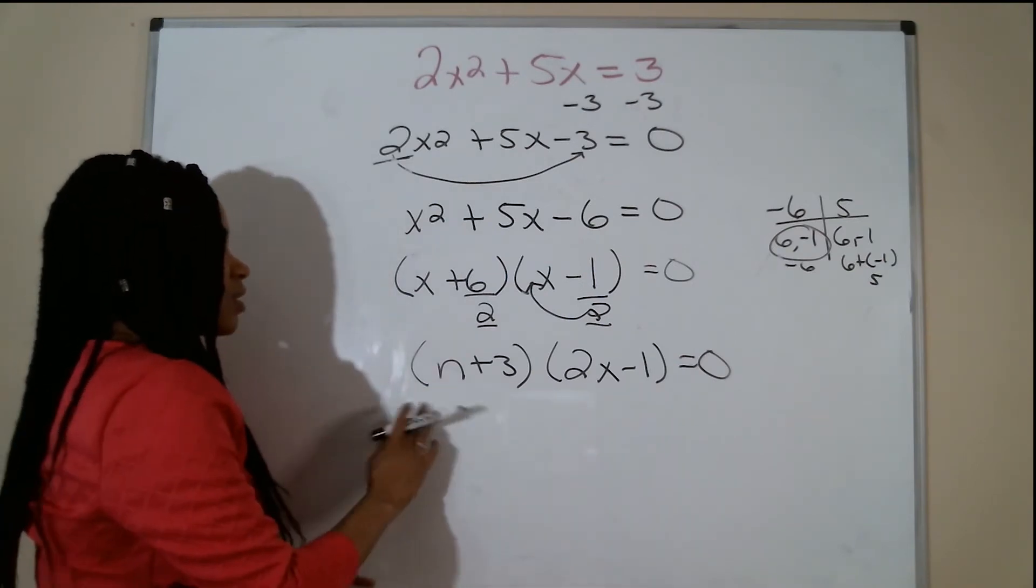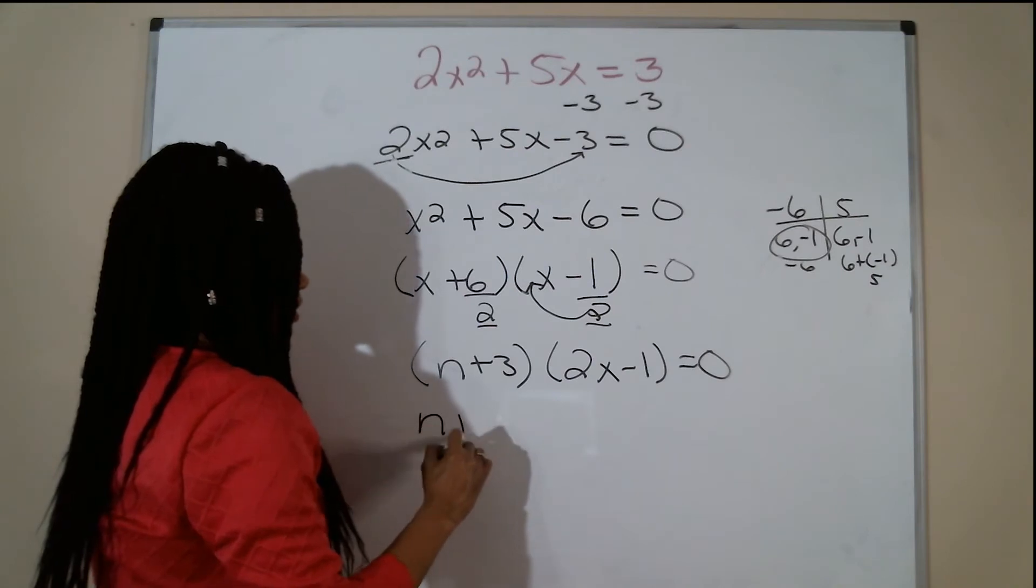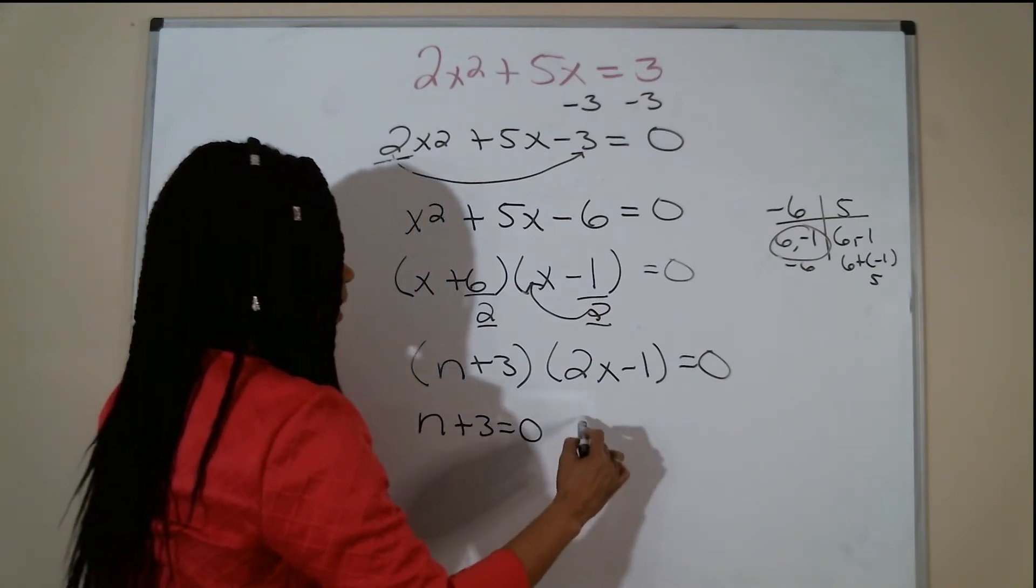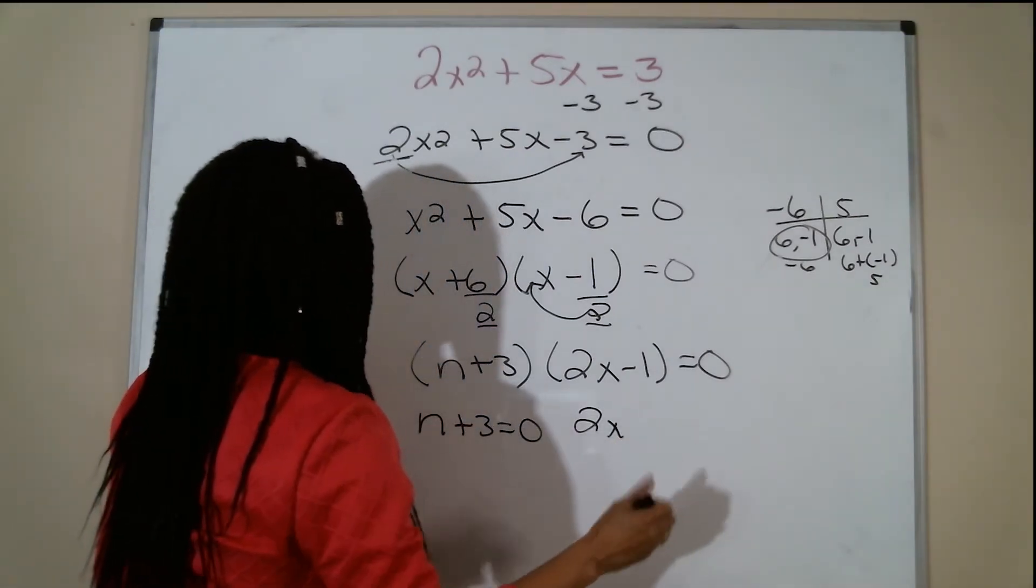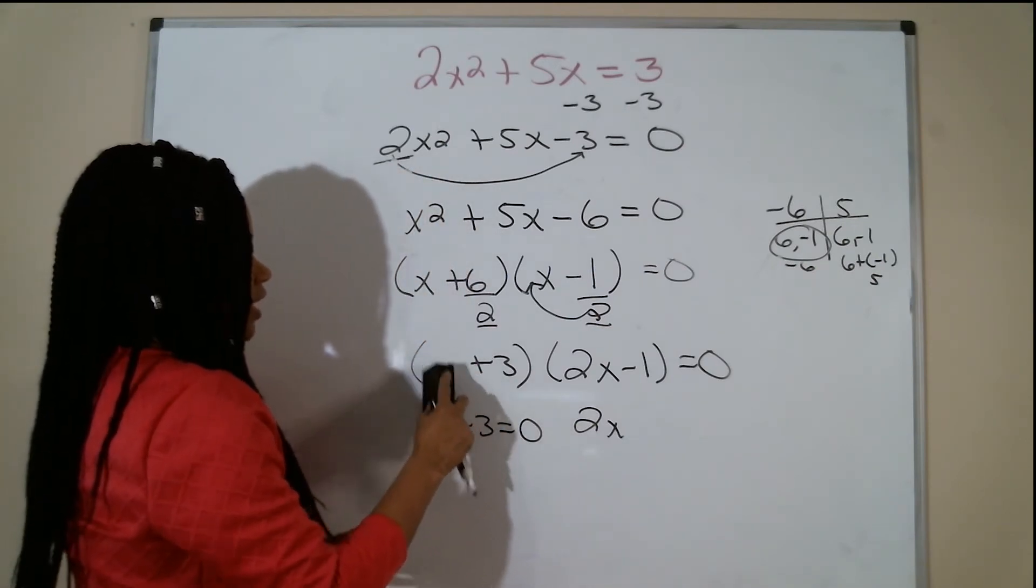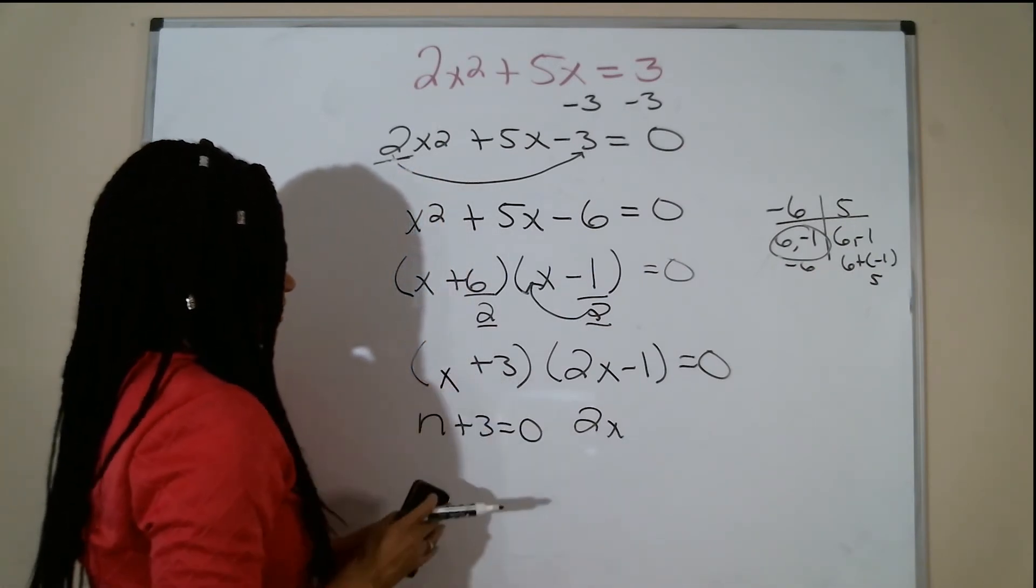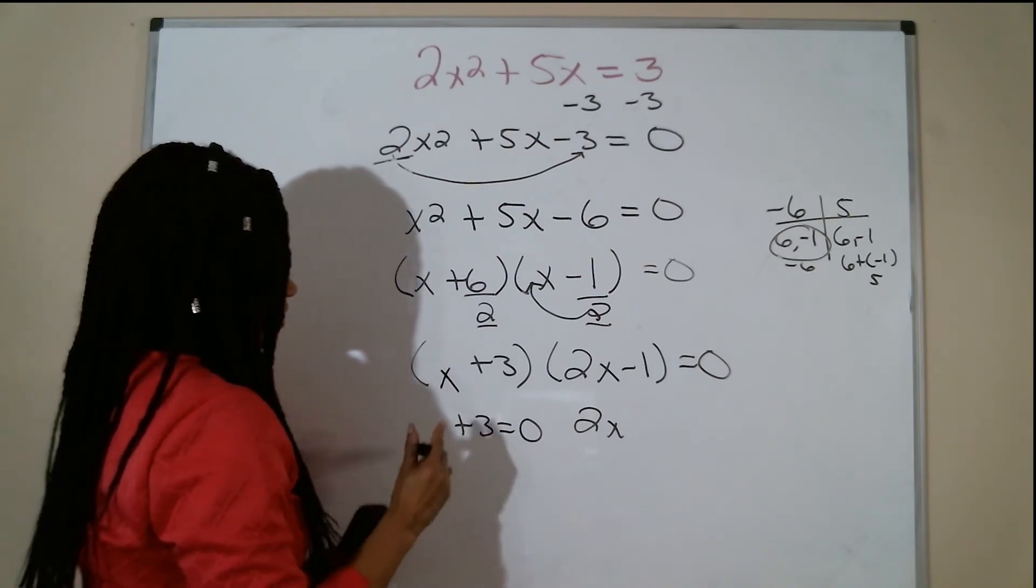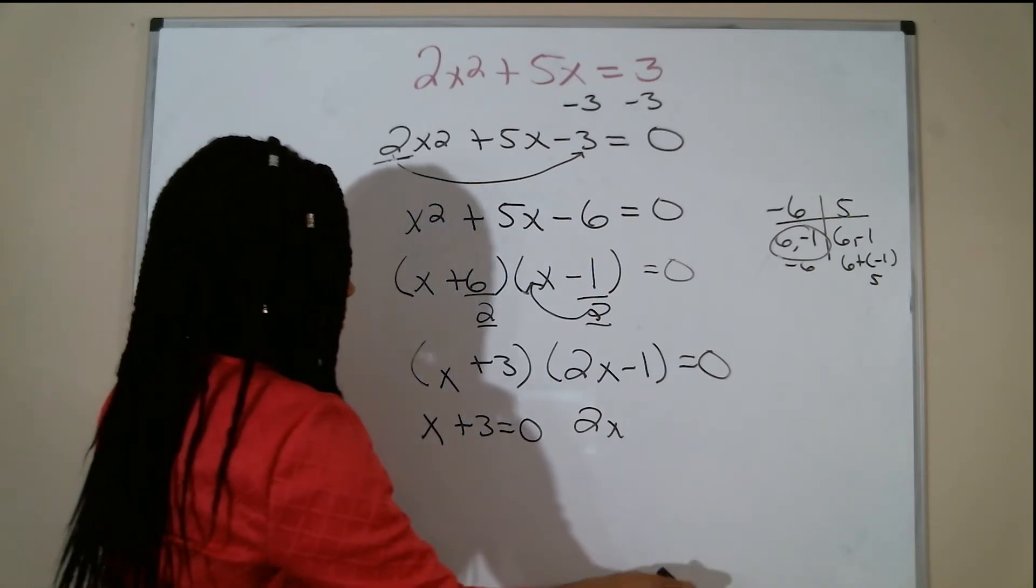So I've actually factored that equation. Now the only added piece is called the zero product property. I'm just going to set each one of my binomials equal to zero.